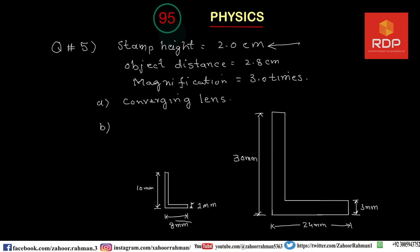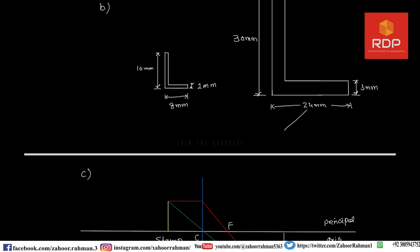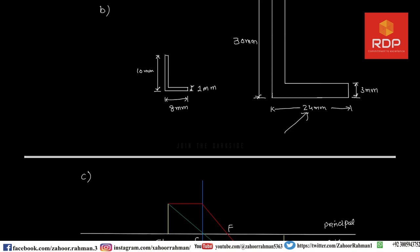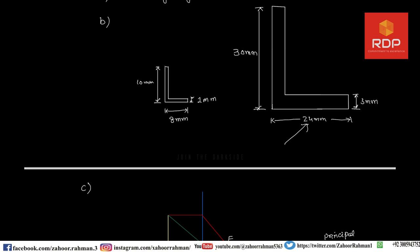Here we have 8 mm. When 8 is multiplied by 3, this dimension in the image will be 24 mm. Similarly, because this area is 1 mm, when we increase the size it becomes 3 mm. Everything will be magnified three times, so I did exactly that.